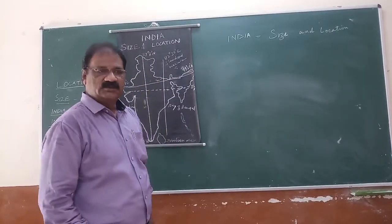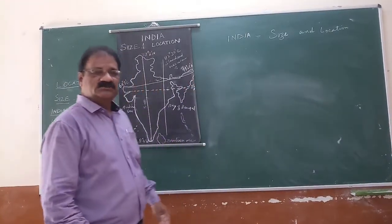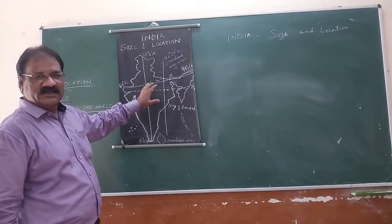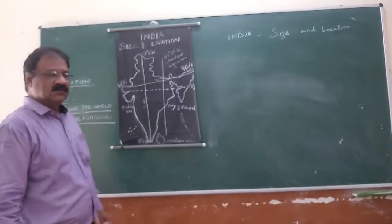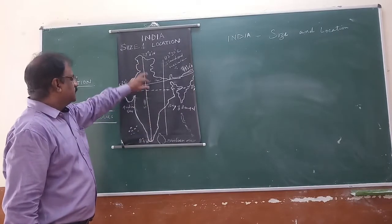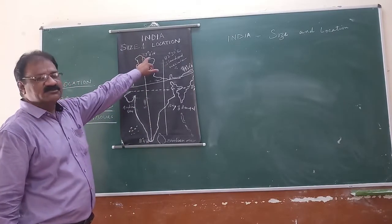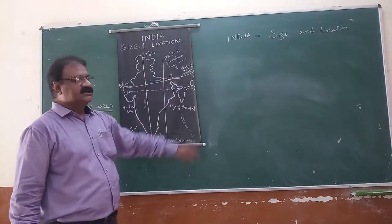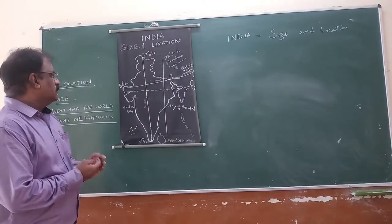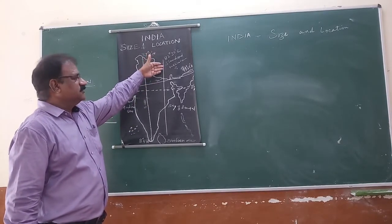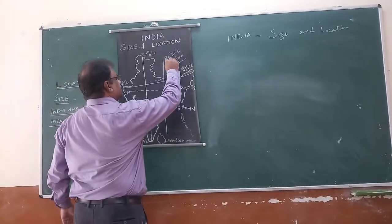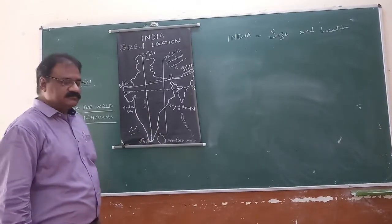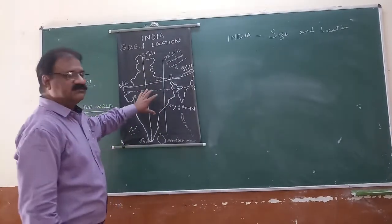This is the very first chapter of your book. In this chapter we are going to discuss about the size and location of India. Let's see this map. India is entirely located in the Northern Hemisphere. The latitudinal extent is 8 degree 4 minute north to 37 degree 6 minute north latitude. Longitudinal extent is 68 degree 7 minute east to 97 degree 25 minute east.